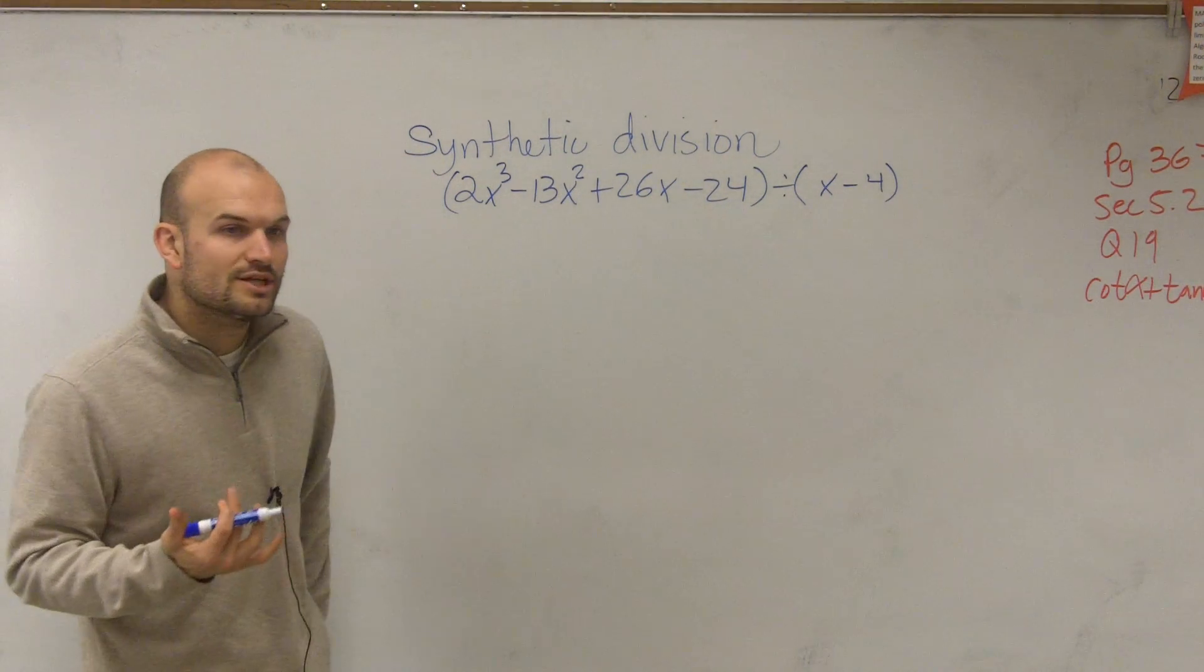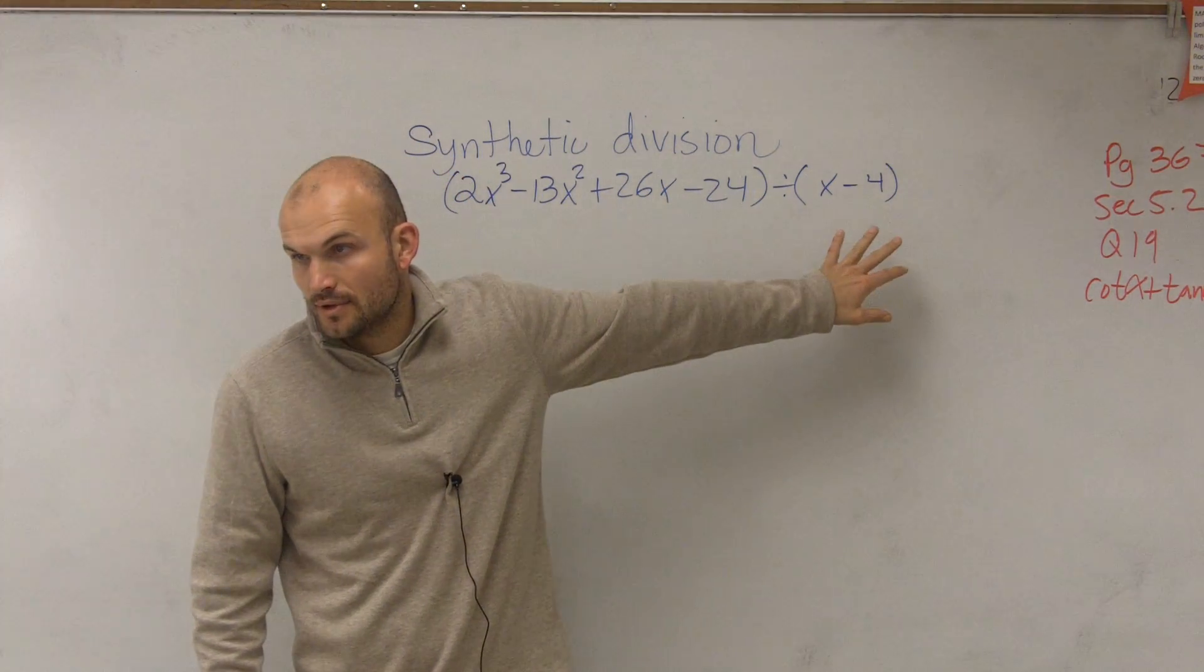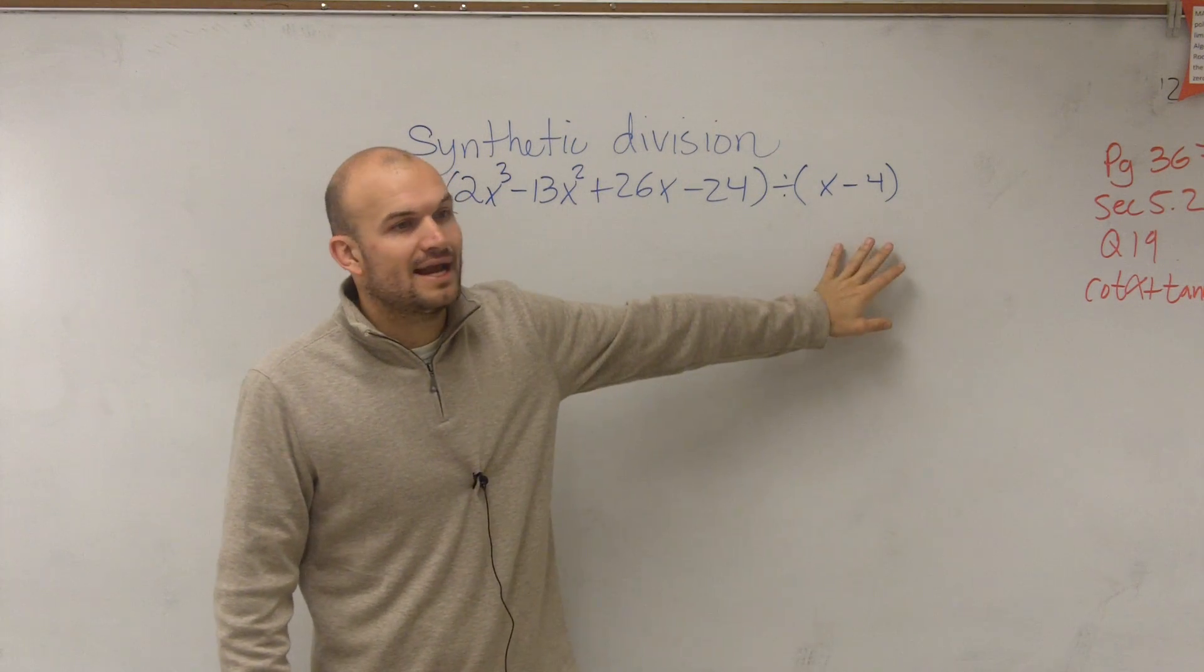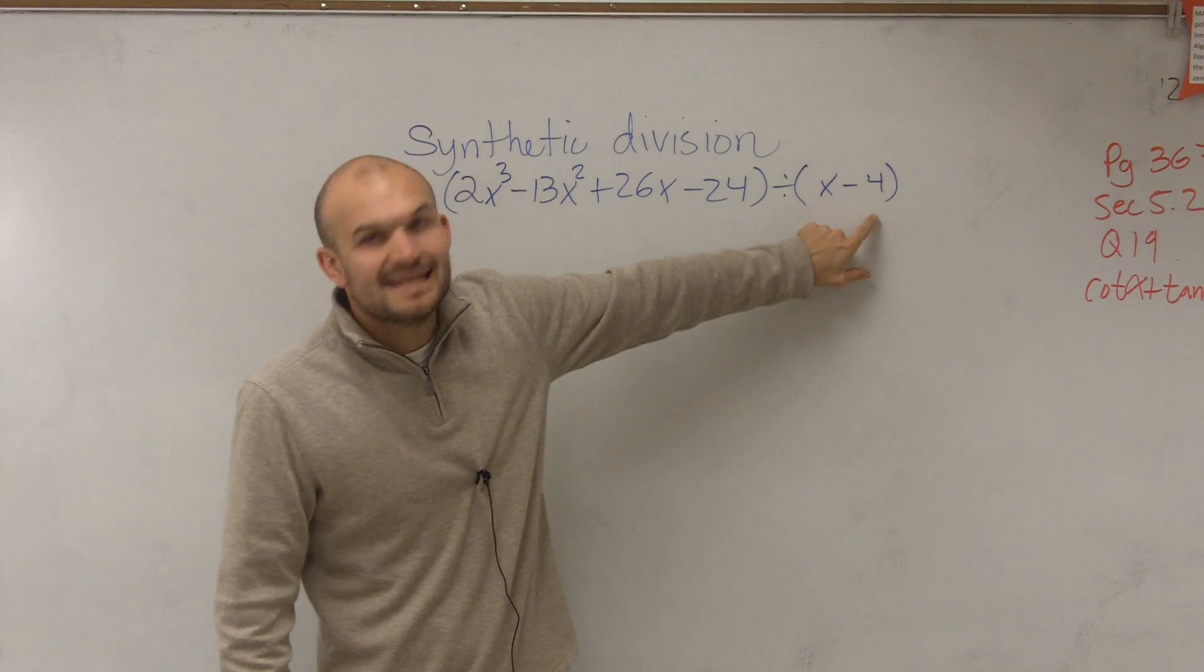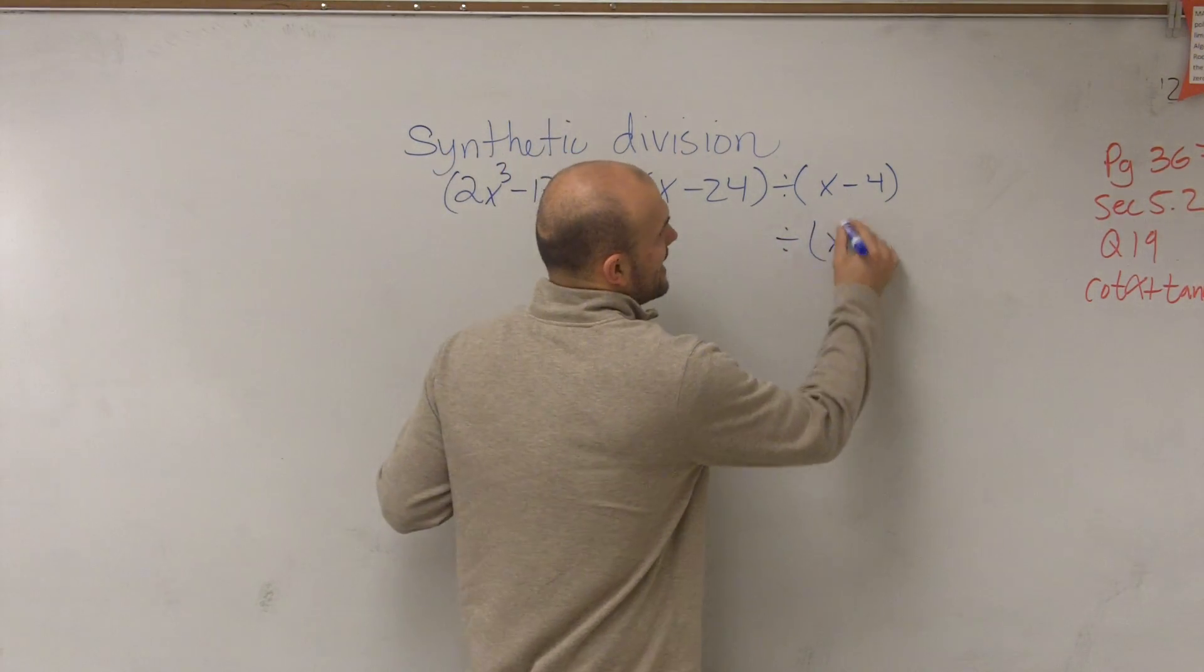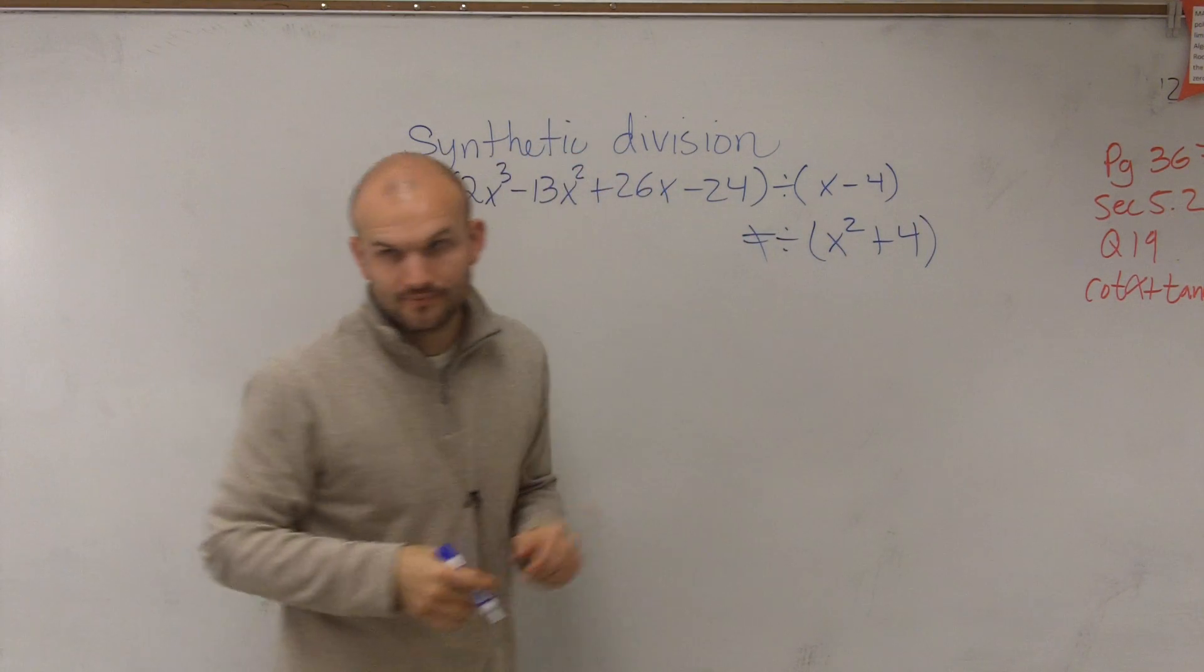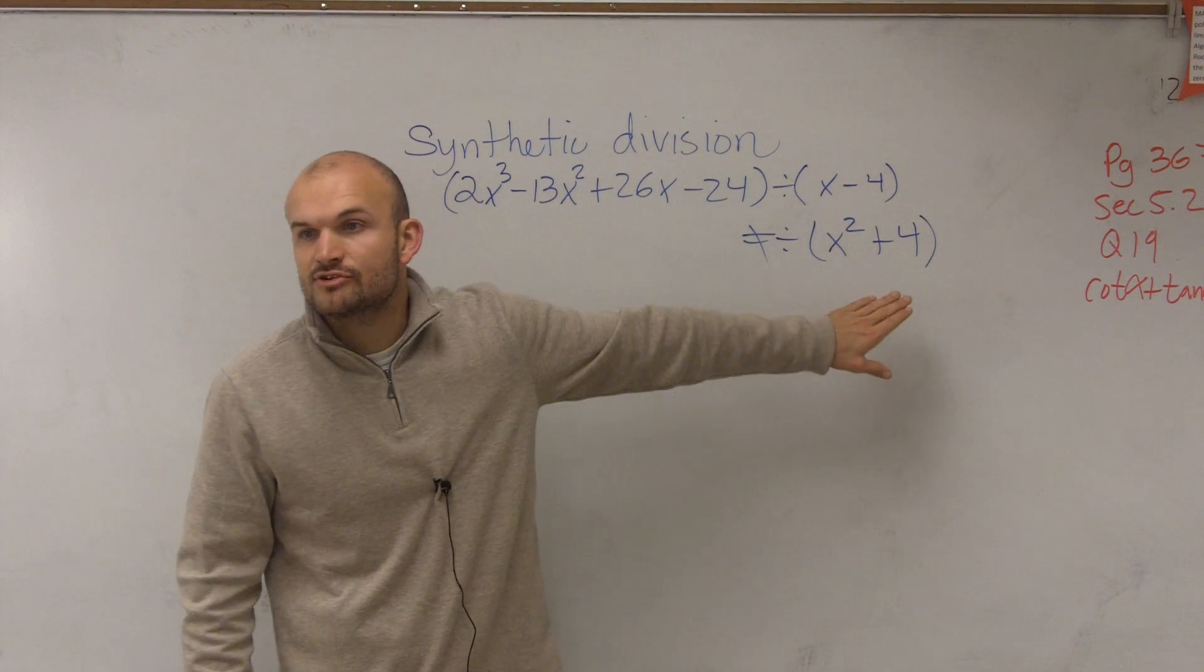First of all, we can only do synthetic division when our divisor is a binomial. That means it has two terms. So if we do not have our divisor as a linear binomial, as long as it is a linear binomial, meaning we cannot divide by x squared plus 4. That would not work. You cannot divide by because that's not linear, that's quadratic.